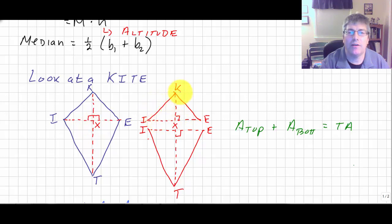So separating my kites out over here, I have a triangle on the top, triangle KIE, and a triangle on the bottom, triangle TIE.